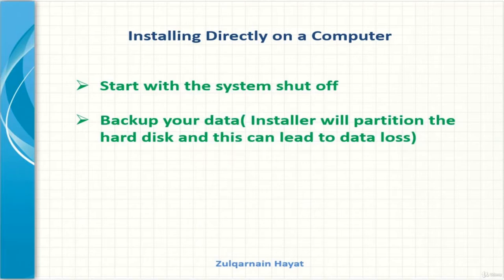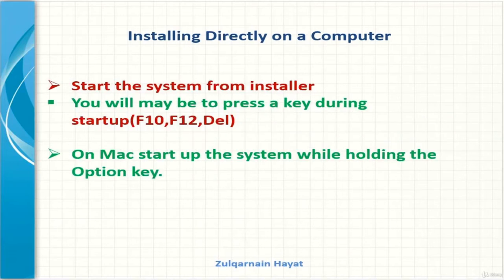With our installation disk ready, I will make sure the computer is turned off and plug in the USB drive. I need to tell the computer to start from this installation disk rather than its built-in hard drive. To do this, press a particular key during the computer startup sequence — on a PC you will usually press F10, F12, or F1. It's usually displayed briefly at the boot screen, so keep a sharp eye out.